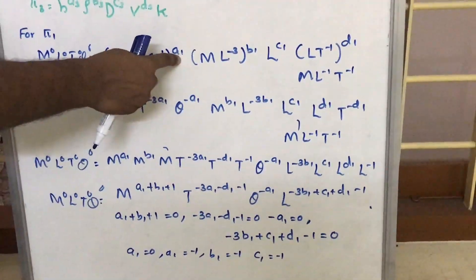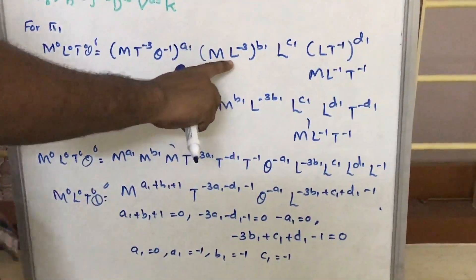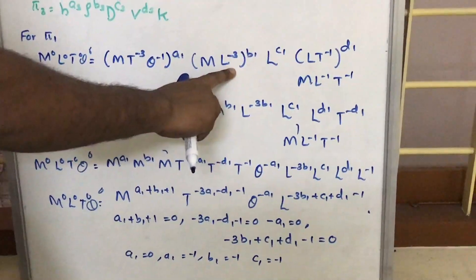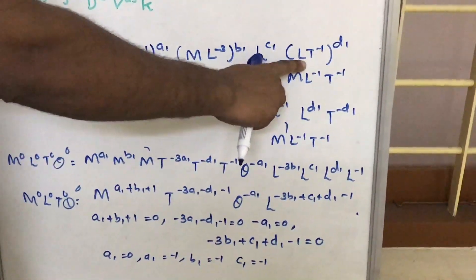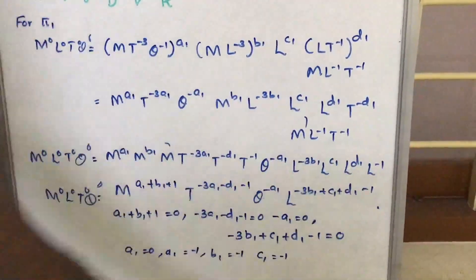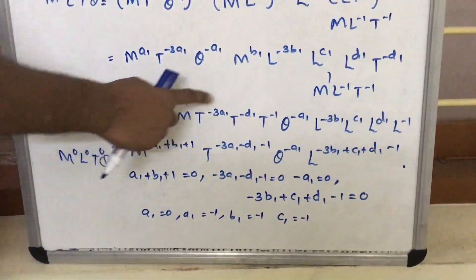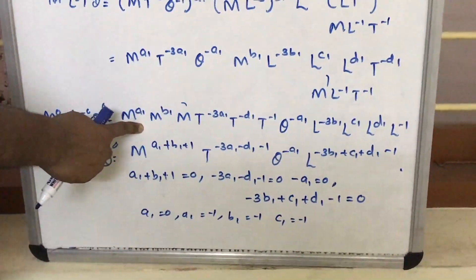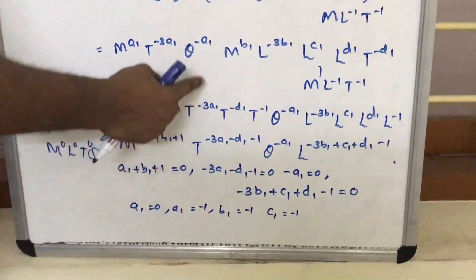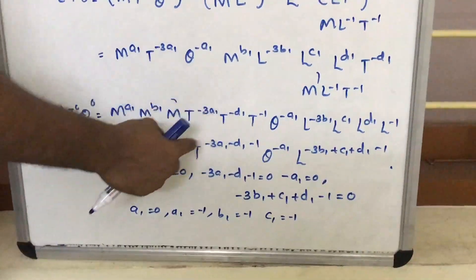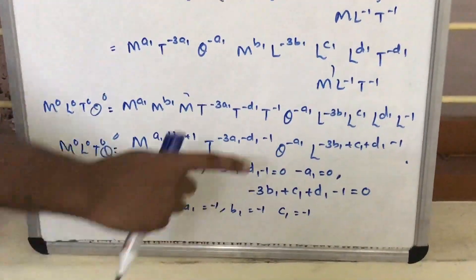Now, taking the powers inside the brackets, we get M raised to A1, T raised to minus 3A1, theta raised to minus A1 from H. From rho: M raised to B1, L raised to minus 3B1. From D: L raised to C1. From V: L raised to D1, T raised to minus D1. From mu: M raised to 1, L raised to minus 1, T raised to minus 1. We then take all M terms together, all T terms together, all theta terms together, and all L terms together.